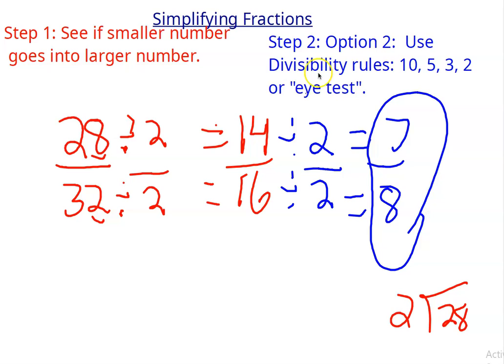So over here I put the word 'eye test.' What the eye test just means to me is, can you just look at it and see something? Now, here we notice we had to simplify by 2 twice. Given the eye test, do you see, without listing the common factors, a number besides 2 that goes into both?